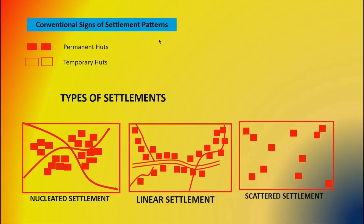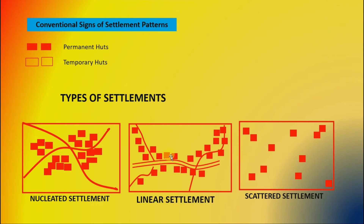Regarding conventional signs of settlement patterns, you would see that a completely filled red box is termed as a permanent hut, and a red box that is just an outline is known as a temporary hut. These are all the types of settlements together. Nucleated settlements are very close to each other; linear settlements are drawn across a road, located on either side of the road; and scattered settlements are far away from each other.